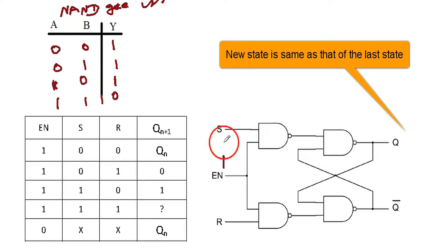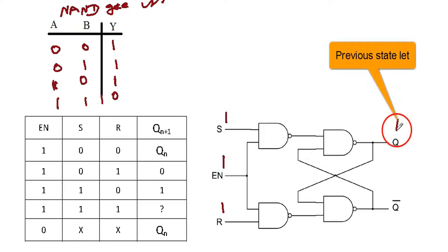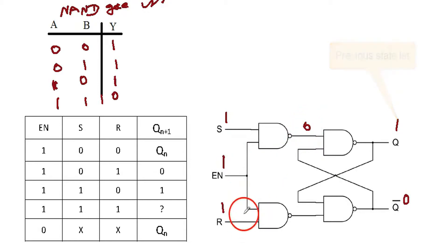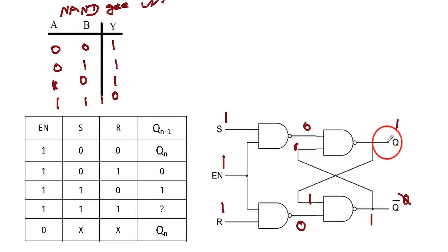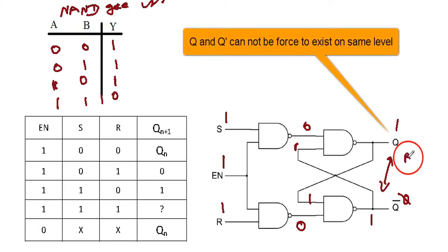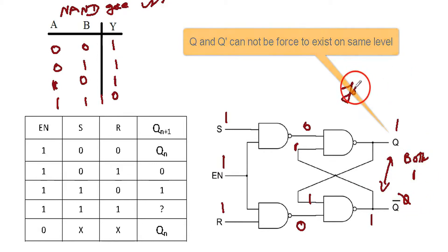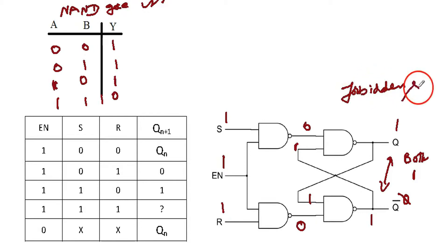Now if S=1, R=1, and clock is high, with previous state 1,0: 1,1 NAND gate gives 0; 1,1 NAND gate gives 0. Then 1,0 gives 1 and 0,1 gives 1 again. So this is a problem — Q=1 and Q-complement=1. The input S=1, R=1 forces both Q and Q-complement to become 1. Q-complement should be the opposite of Q, so this is the forbidden state.